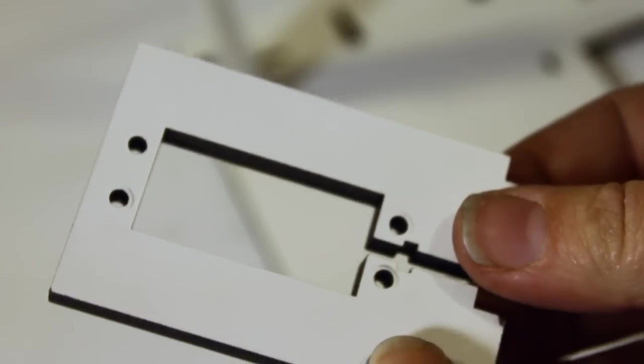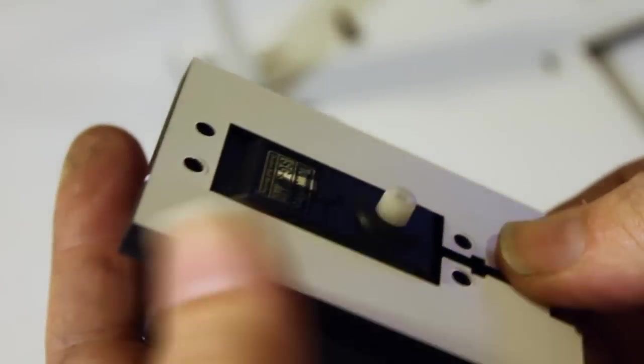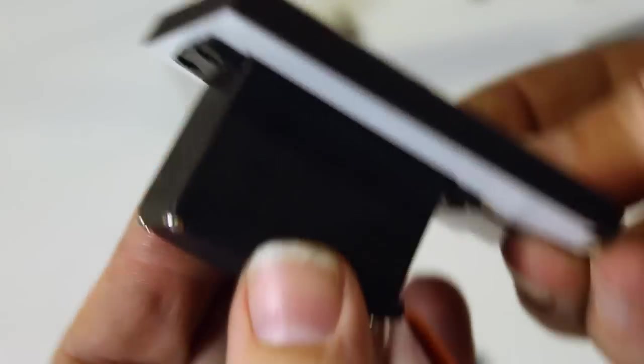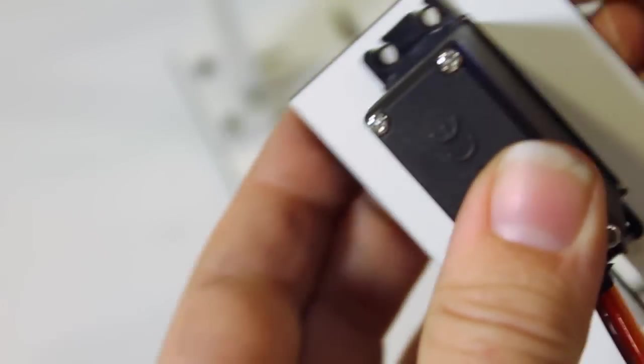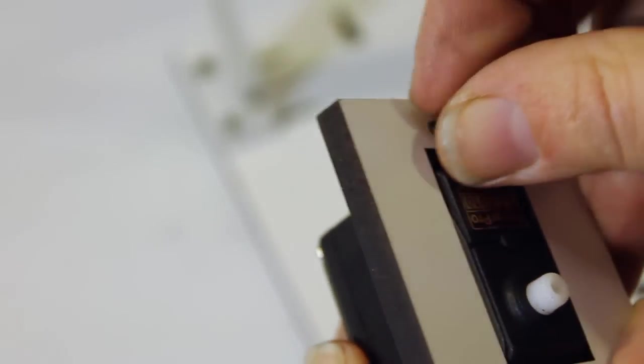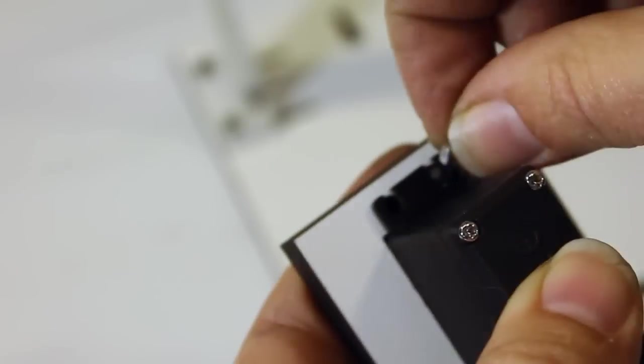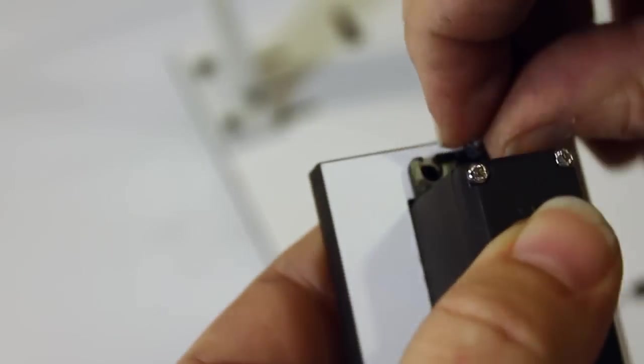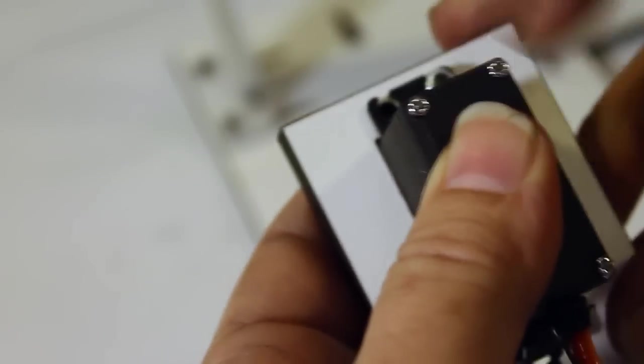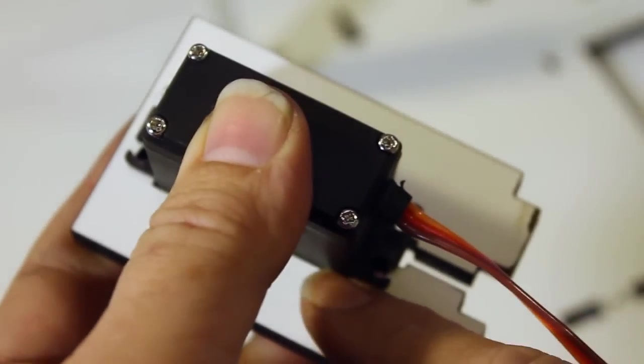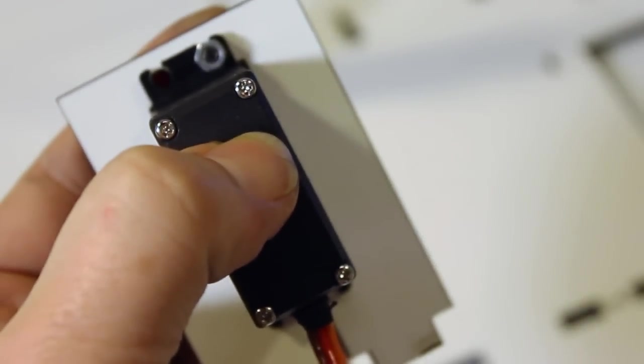Next get the laser cut servo mount. Put the servo in from one side with the wire facing down. Then use four M12 screws to mount it on. You don't actually have to use four screws, that's kind of overkill, but two is plenty. If you do one and one diagonal, or if you're complete, you can go for all four.